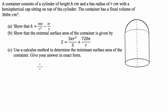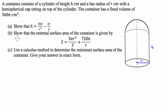Hello everyone, we've got an applications of differentiation or applications of calculus question today. We've got a container that consists of a cylinder of height h centimetres and a base radius of r, with a hemispherical cap sitting on top of the cylinder. The container has a fixed volume of 360 pi centimetres cubed. We need to show that the height equals a given expression, the external surface area equals another expression, and then use calculus to determine the minimum surface area, giving our answer in exact form.